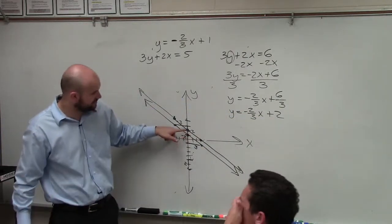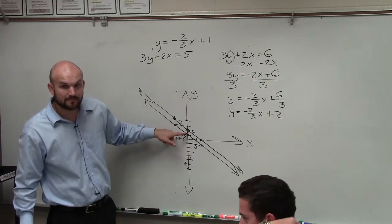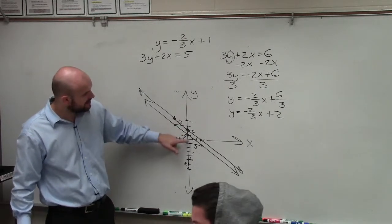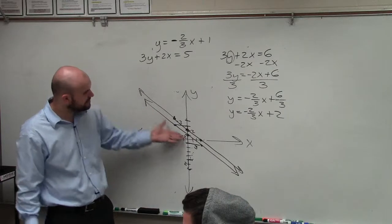To graph it, you go to your y-intercept, which is 2. So now the slope is here. But what you guys should notice is, do these two lines intersect?